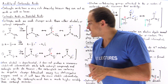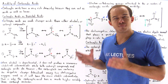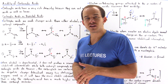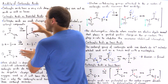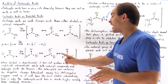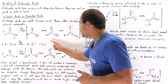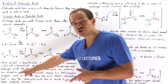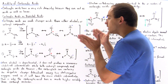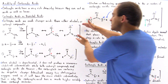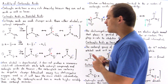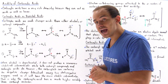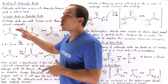When an alcohol is deprotonated it does not form a resonance-stabilized intermediate, while both carbonyl compounds and carboxylic acids do — that's why these are better H-atom donors than alcohols. The carboxylate ion has negative charges focused on electronegative oxygen atoms, whereas the enolate has only one electronegative oxygen atom. That is why carboxylic acids have a much higher acidity and lower pKa than carbonyl compounds.